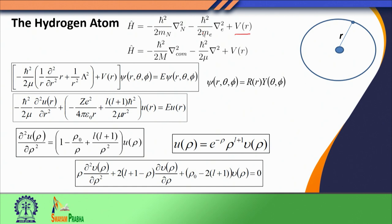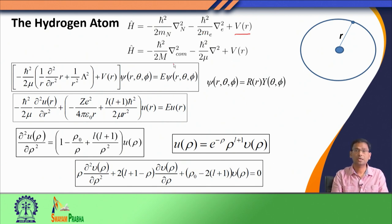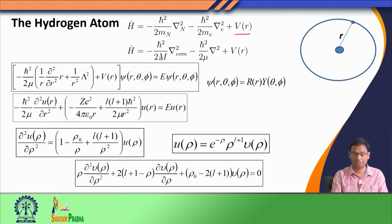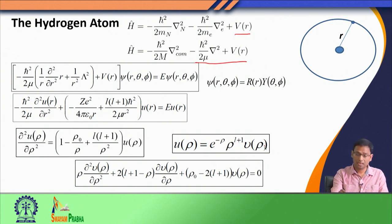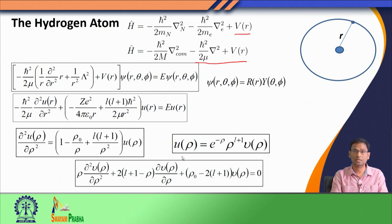Since we have this two-body problem, we changed it to two effective one-body problems. The first term represents the overall translational motion of the centre of mass with a fictitious mass combining the mass of the nucleus and the mass of the electron. The second term relates to the internal degree of freedom — the kinetic energy connected with the internal degree of freedom, that is the distance between the electron and the nucleus.